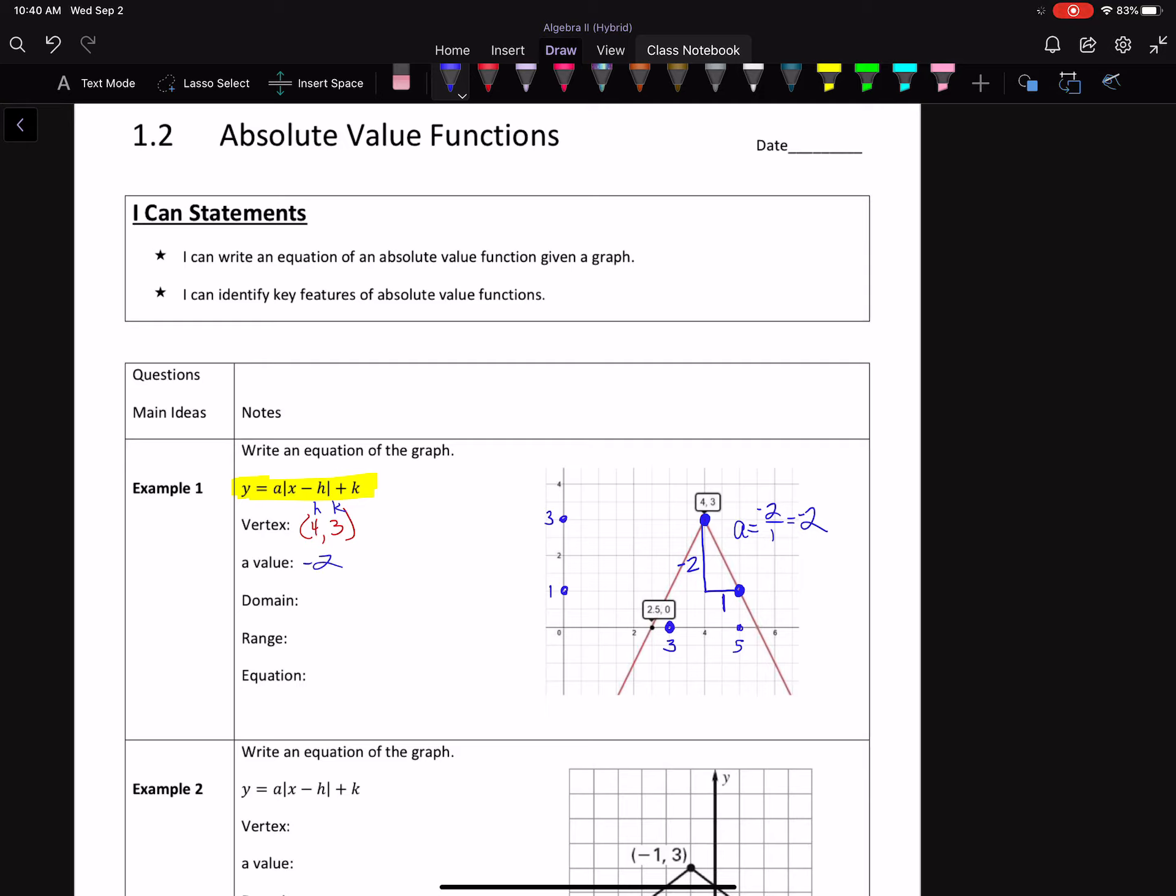The domain for all of the absolute value functions, x is going to be in the real numbers always. The range, so we start up here at what looks like 3, so how is y going to compare to 3? Well, if you look at my graph, it's everything below 3, so we're going to say less than or equal to 3, or the k value connection.